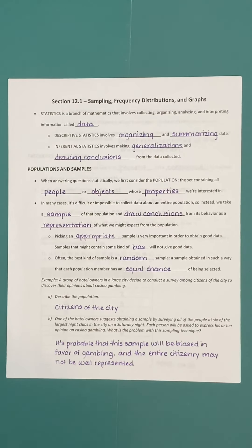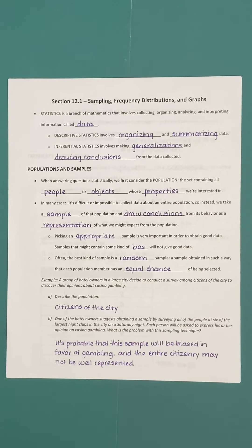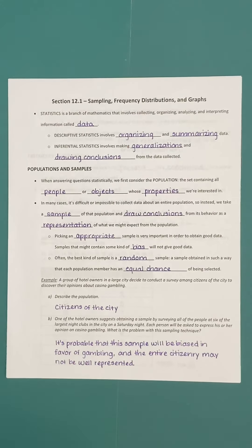A random sample is obtained in such a way that each population member has an equal chance of being selected. We're not favoring one particular member or category within the population over another — everyone is ultimately selected randomly. Let's look at an example and talk about the population and what a sample might look like.